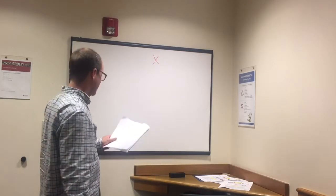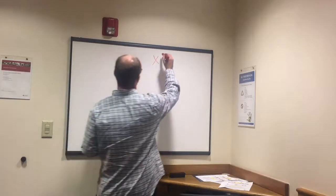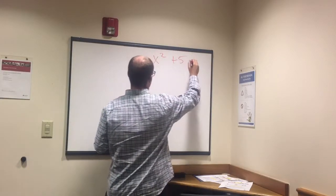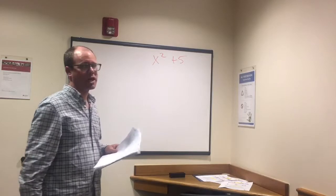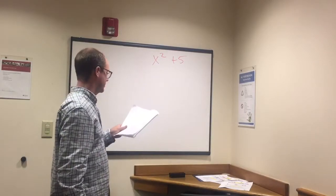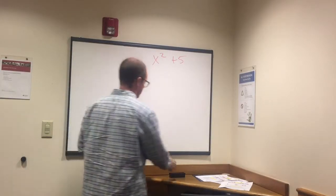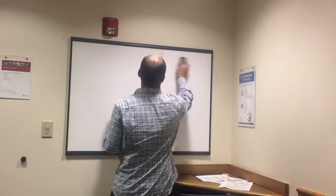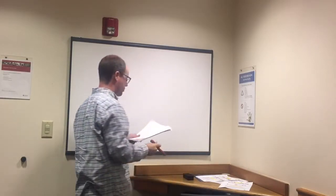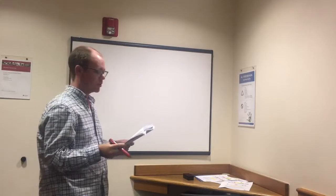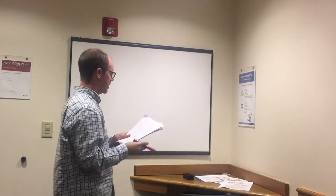As opposed to x squared plus 5, what would we call that? A binomial. Two terms. Monomial means one term, binomial two terms.